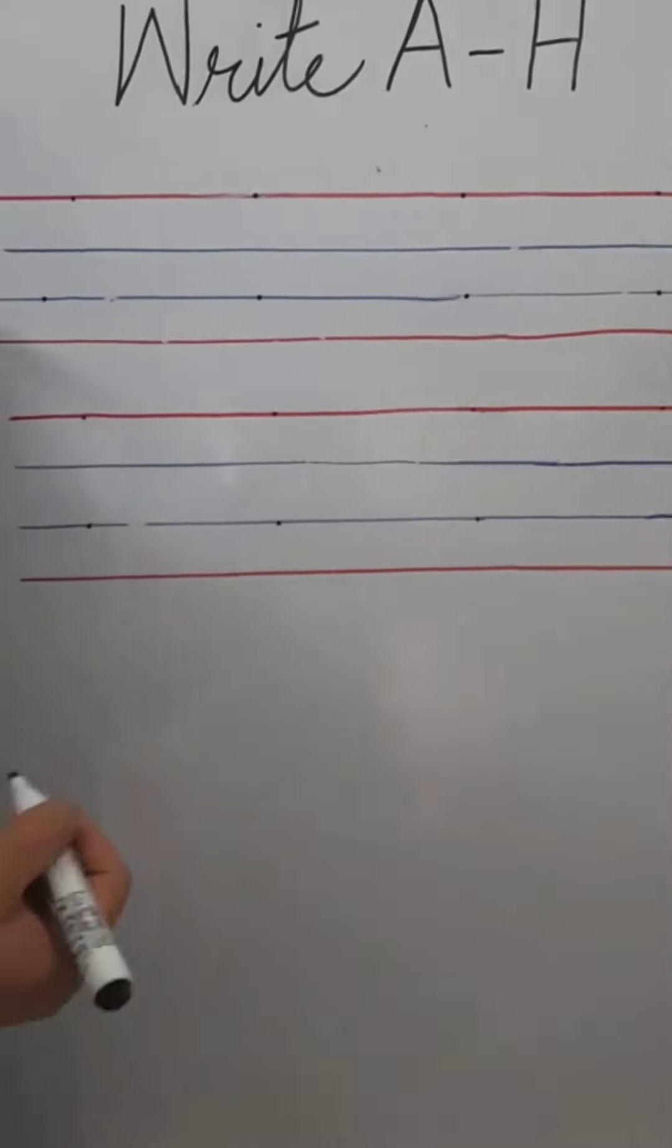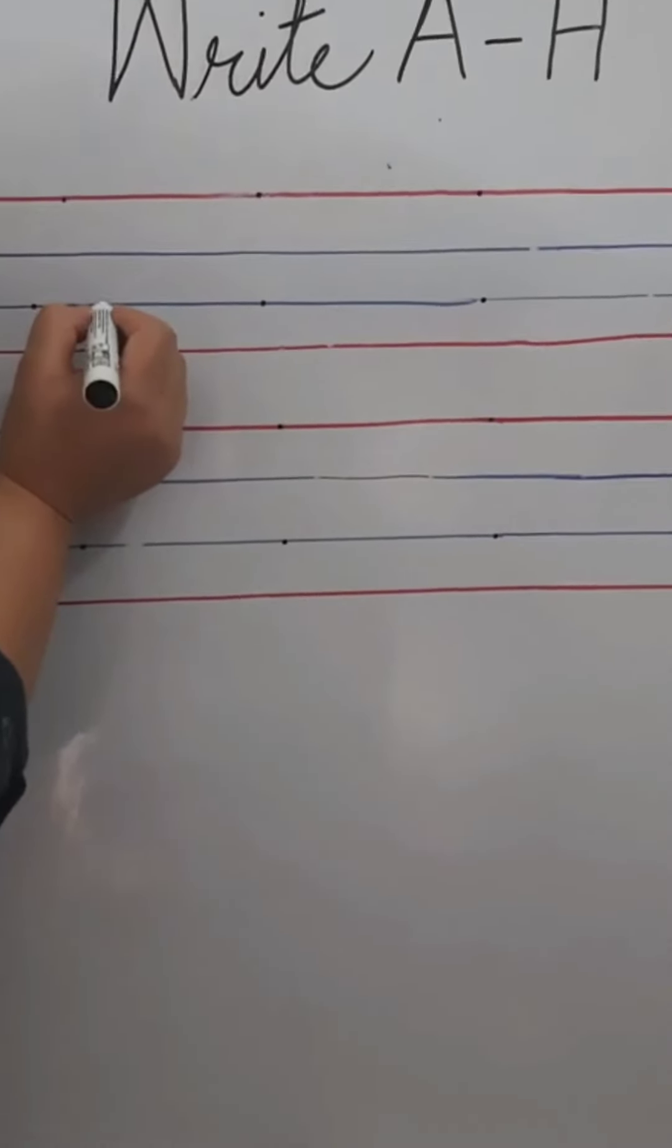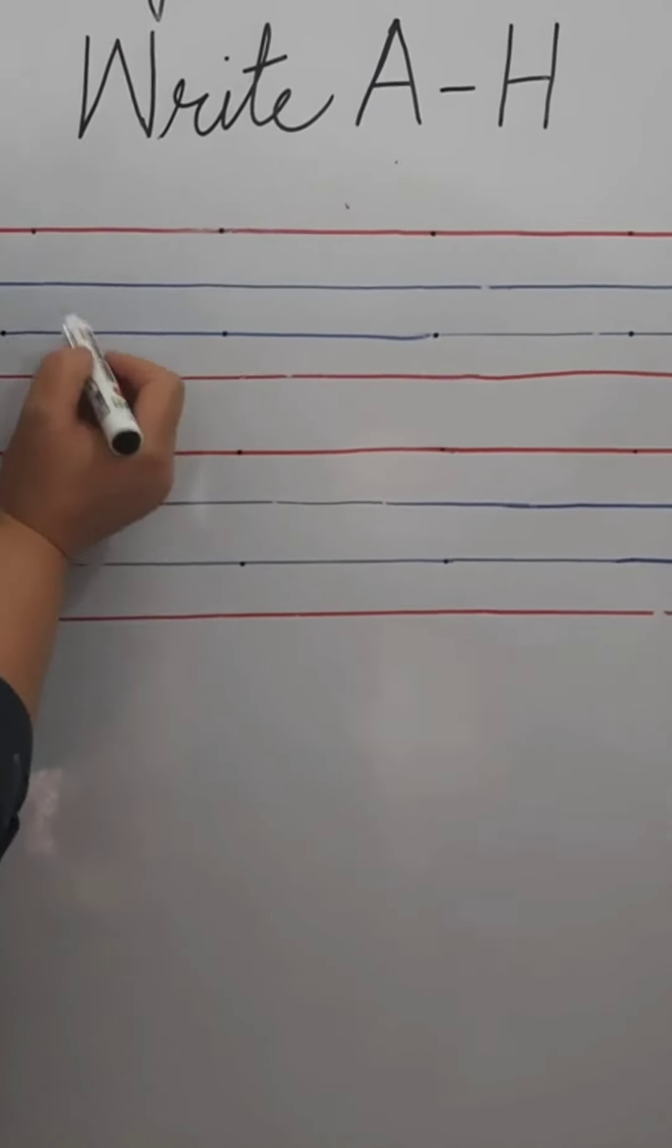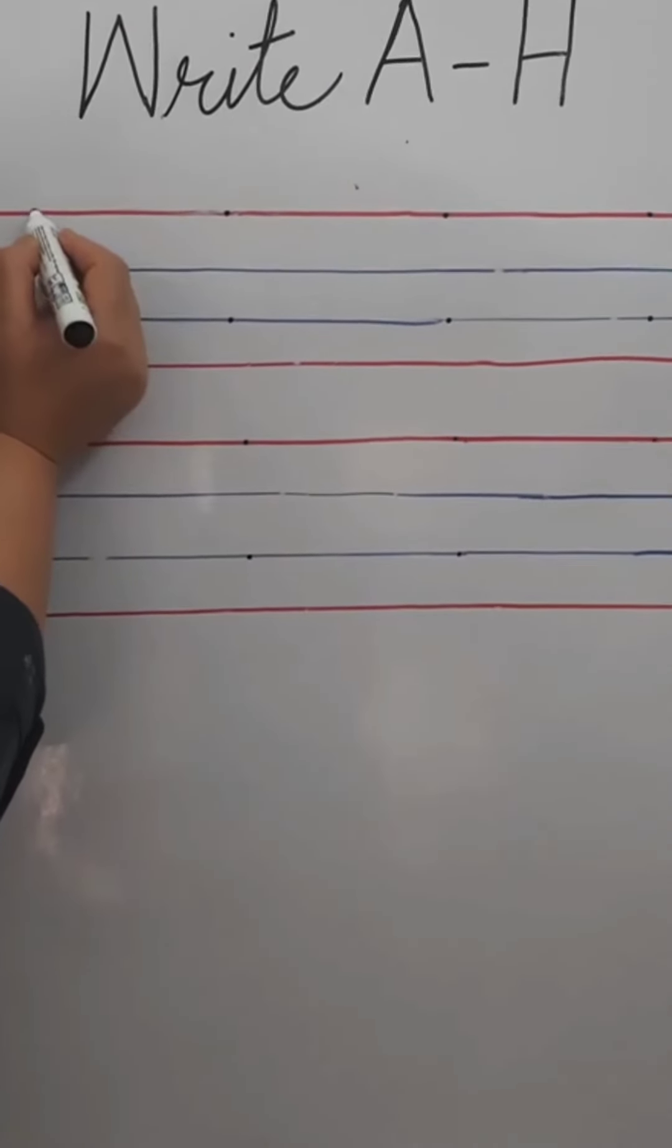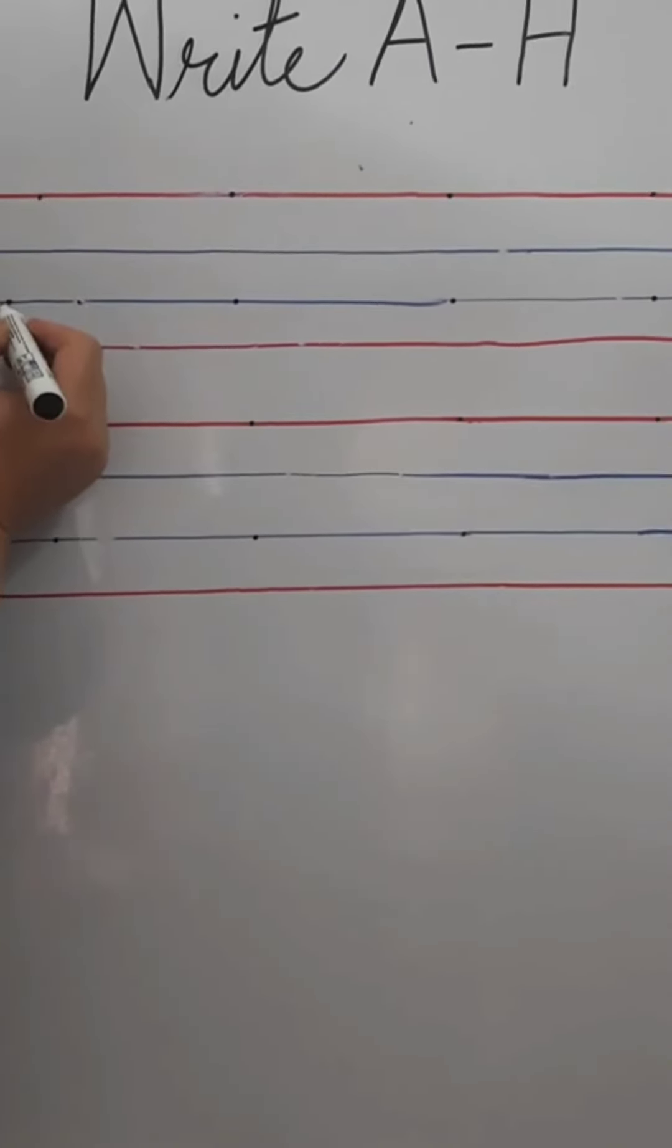So, shall we start writing? Pehle hum A dekhengi kaise likhna hai? So, here are three dots. So, we will start from red line to second blue line.